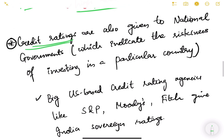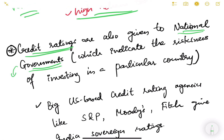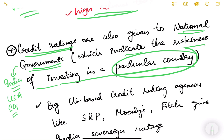Credit ratings are not just given to companies — they are also given to national governments, meaning countries. So there are credit rating agencies which give ratings to countries like India, USA, and Singapore. These ratings indicate the riskiness of investing in a particular country. For example, a foreign investor who wants to invest in a country through FDI or foreign institutional investments will look at the national credit ratings.